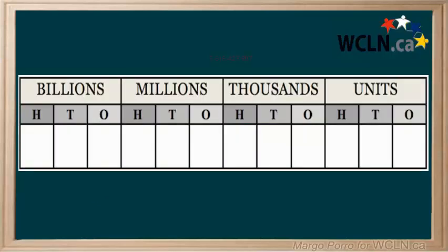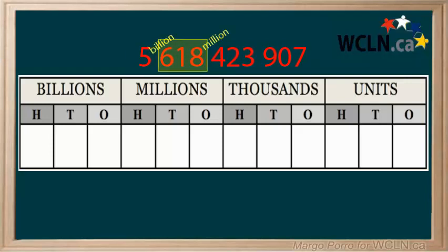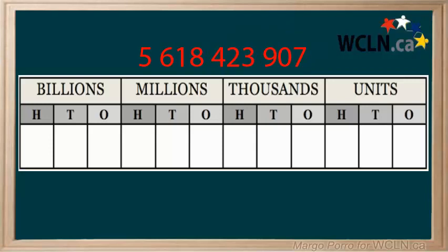Let's use a place value chart to explore another really large number: 5,618,423,907. We can put the number into the chart, starting with the smallest place value in this number, the ones place. The seven is in the ones place — it is worth seven ones, or simply seven. Next is the very important zero. Why is zero so important? It's used as a placeholder. It tells us that there are zero tens, so we can move on to the hundreds. Because the nine is in the hundreds place of the unit period, it has a value of 900.